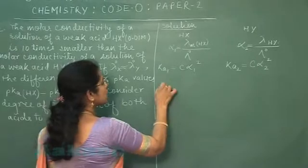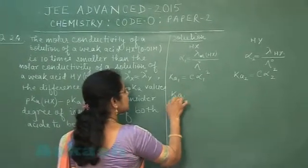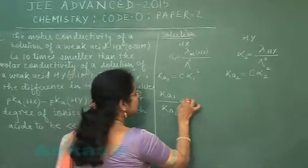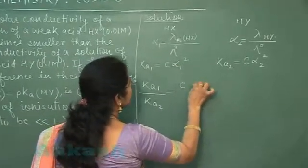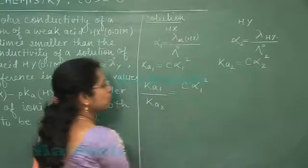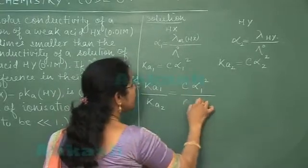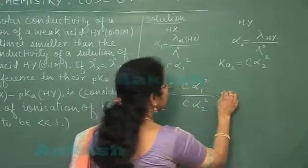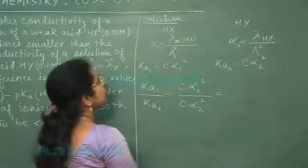Now in this question, this is Ka1 by Ka2. हम ऐसे लेख सकते हैं. This is C alpha 1 square by C alpha 2 square. C की value दोनों question में दोनों के लिए दे हुई है.